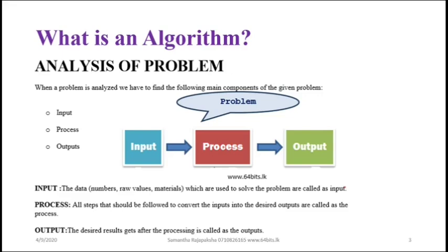Inputs are things like numbers or materials. The process is the one which converts these inputs into outputs. Outputs are the results you get after processing. This process involves a set of steps - those steps are what we call the algorithm. Once you follow these steps in the algorithm, the inputs will be converted into outputs. When problems are going to be solved, we need to identify the main components and sub-components, and for each identify the inputs, outputs, and the process.